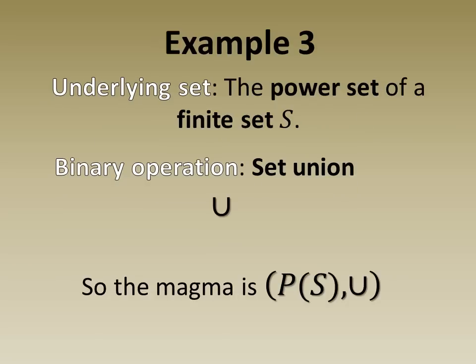In example 3 we have the power set of a finite set S under set union. As the union of two subsets of a set is also a subset we have closure and so we have a magma.